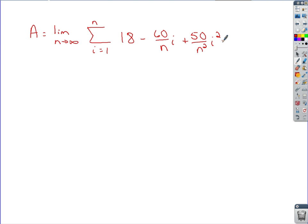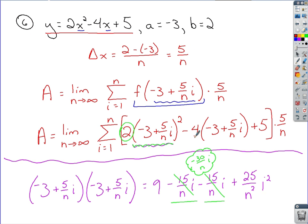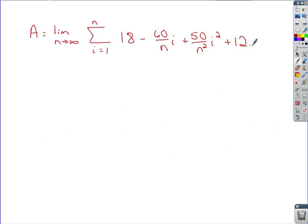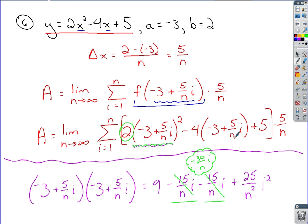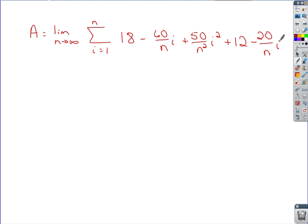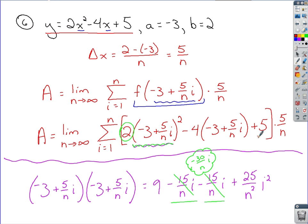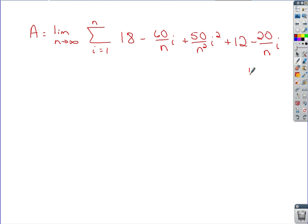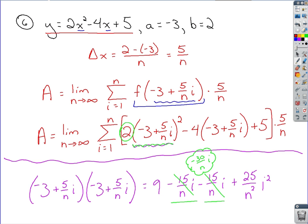So that's just for the squared part, which is the worst part here. The rest of it, like this negative 4 here, I can distribute that through. I get plus 12, and then negative 4 times this would be negative 20 over n i. Anything left? Plus 5. We've got all of this multiplied by that base. So that base was 5 over n.